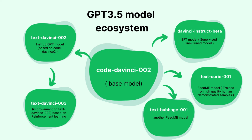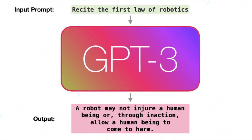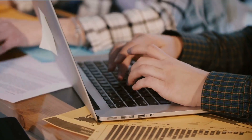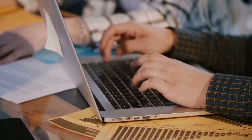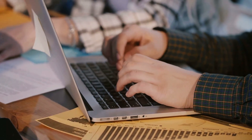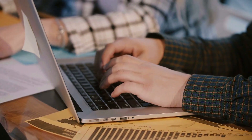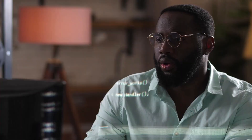ChatGPT works by taking in a prompt, or a starting text, and then generating a continuation of that text based on the input. This prompt can be anything from a simple question to a complete conversation.